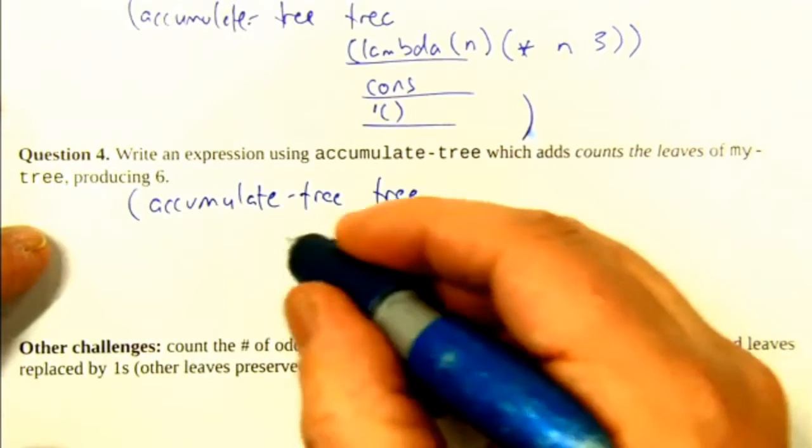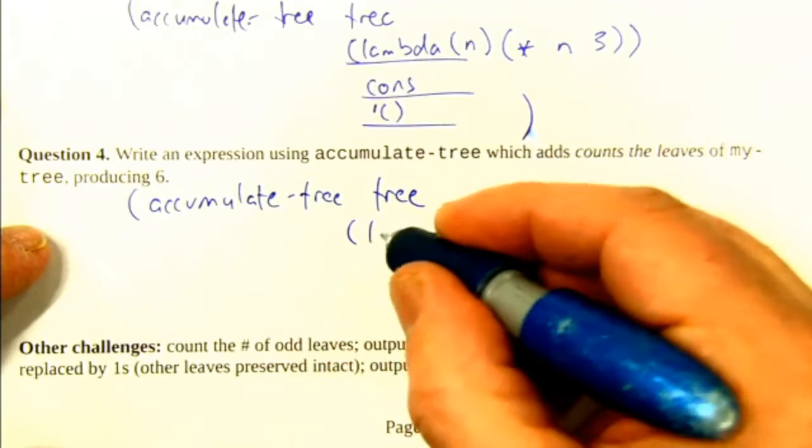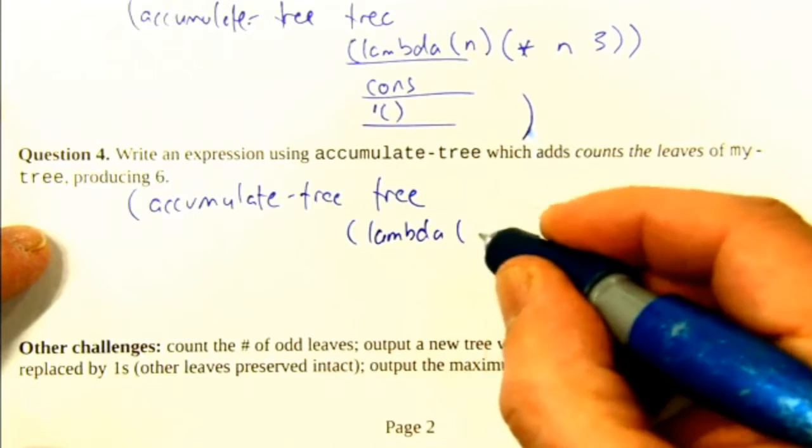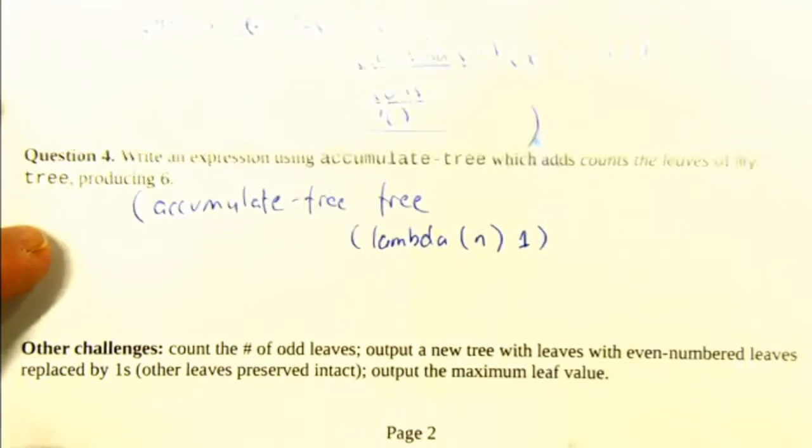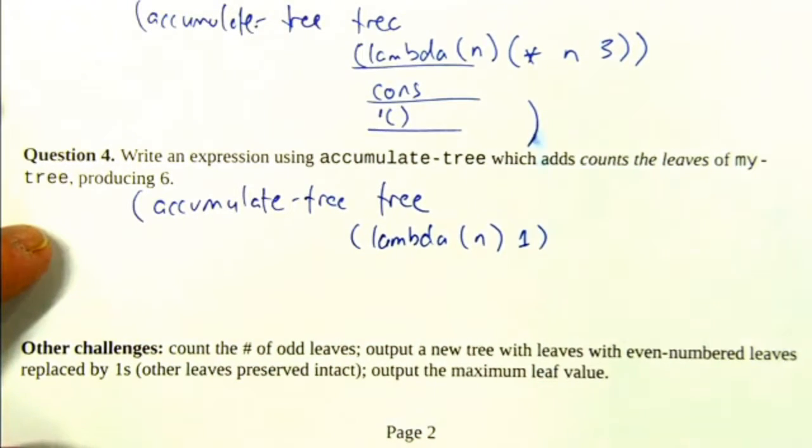So the way I was thinking about it is your leaf transformation function accepts the leaf and then gives you a 1. So each leaf counts for 1.